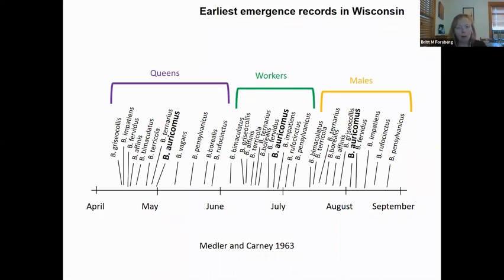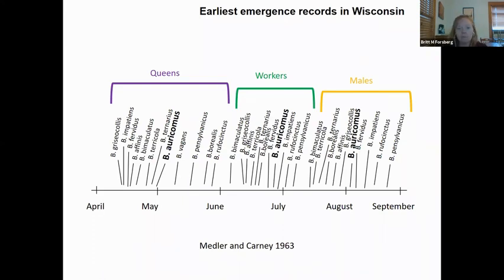What time those queens emerge will be different per species, but it is always the queens first, then the workers, then the males — and you could add in new queens along with those males. There are some species that tend to be very early, and some that start later in the year.